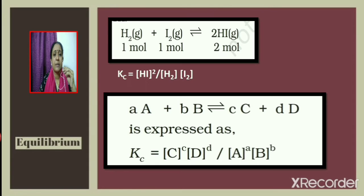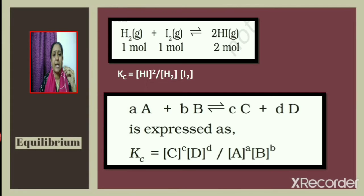For the general reaction: a moles of A + b moles of B ⇌ c moles of C + d moles of D, the equilibrium constant Kc is given as Kc = [C]^c · [D]^d / [A]^a · [B]^b. This expression is known as the law of chemical equilibrium.